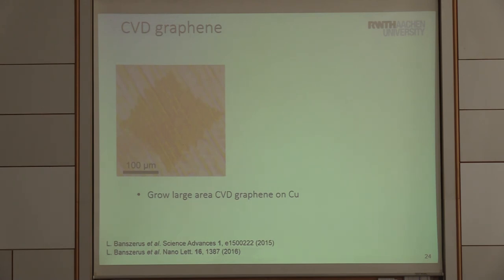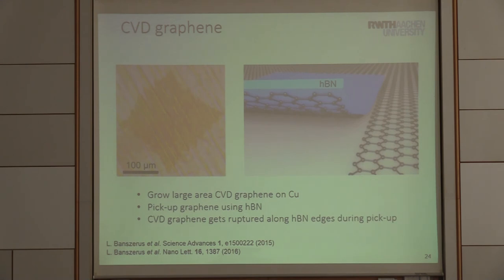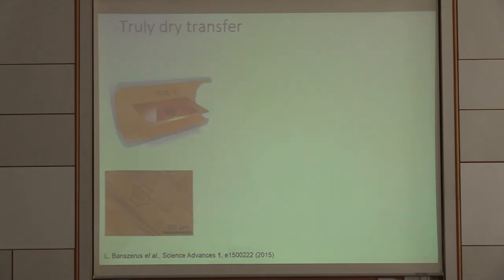I think all what you should know is that we can grow graphene on copper. It looks like this. And I think the important part is we can pick it up with no wet chemistry. It's a pure mechanical delamination. We can place boron nitride in a way onto this graphene that the van der Waals force between graphene and boron nitride is stronger than between copper and graphene.